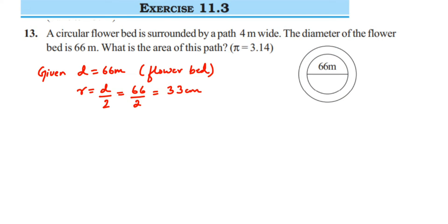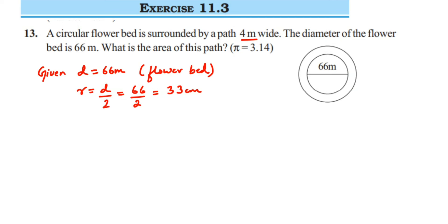To find the area of the outer circle, we need its radius. We know only the flower bed radius of 33 meters. Since the path is 4 meters wide, the radius of the outer circle will be 33 plus 4, which equals 37 meters. Now we'll find both areas.